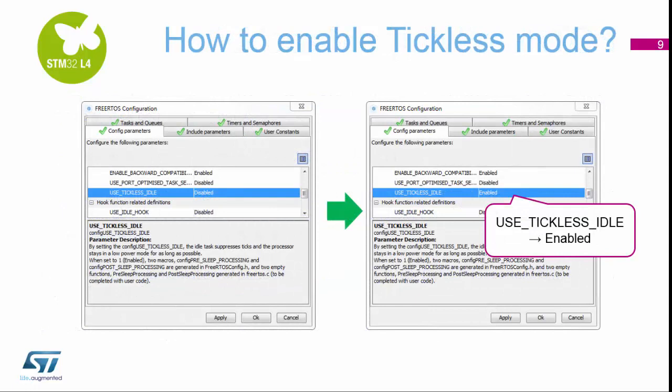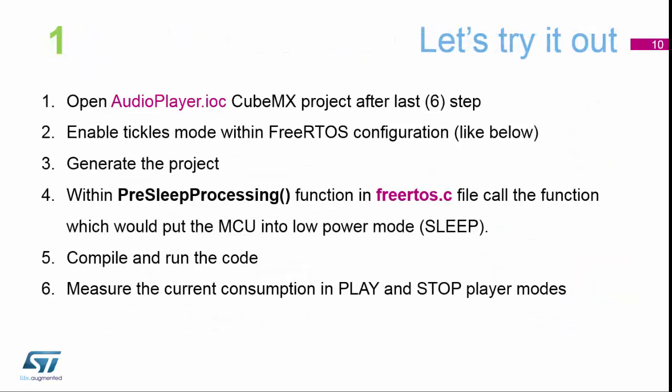How do we enable tickless mode? This is controlled through the CubeMX tool, and it's in the config and parameters section of the FreeRTOS configuration. All we need to do is change the mode from currently disabled to an enabled state. We're going to open our audio player IOC file — the CubeMX project from where we left off — go into the FreeRTOS configuration and enable tickless mode. We're going to generate the project, then add one line of code inside our FreeRTOS.c file to specify exactly which low power mode we're going to go into. Then we will build and run our code and compare how much current consumption we have saved.